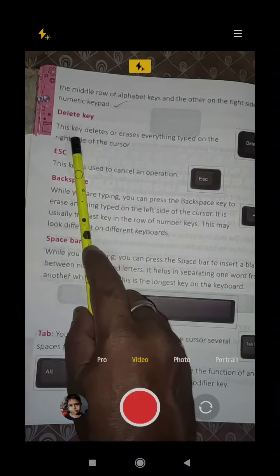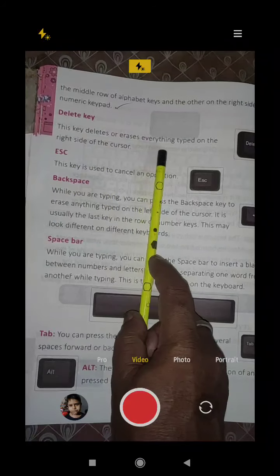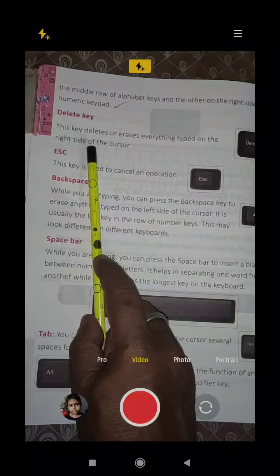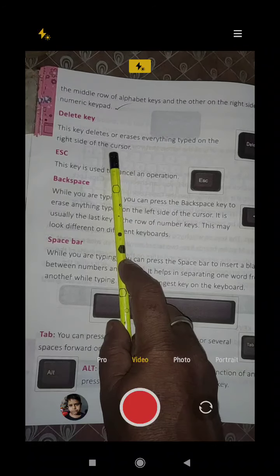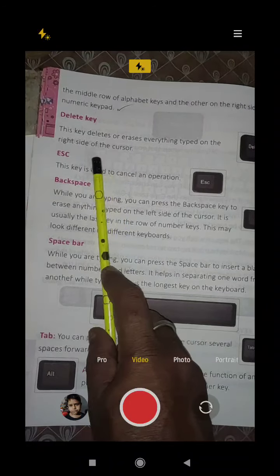Delete key. This key deletes or erases everything typed on the right side of the cursor. When we press this delete key, the cursor's right side will be deleted.